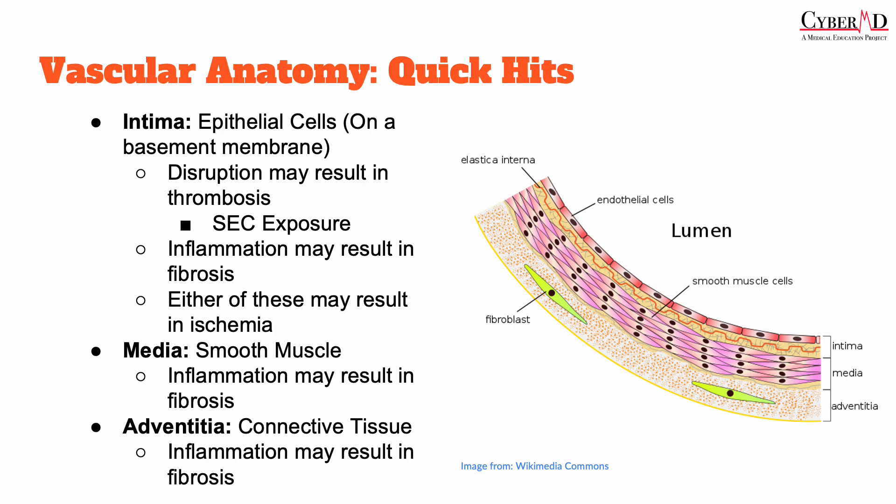Finally, we have the outermost layer of the vessel wall, the adventitia, which is made up of connective tissue. Disruption of the intima can lead to thrombosis, or the formation of blood clots, due to the exposure of subendothelial collagen, which can obstruct blood flow and lead to tissue ischemia or oxygen deprivation. Additionally, chronic inflammation of the cells composing the vasculature may result in fibrosis, which may also lead to ischemia as the lumen of the vasculature narrows.